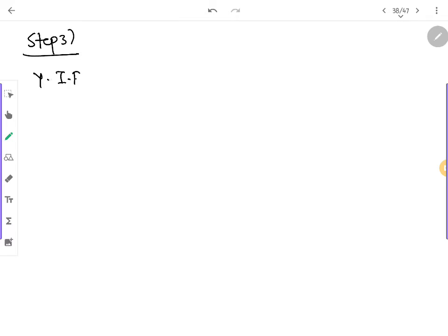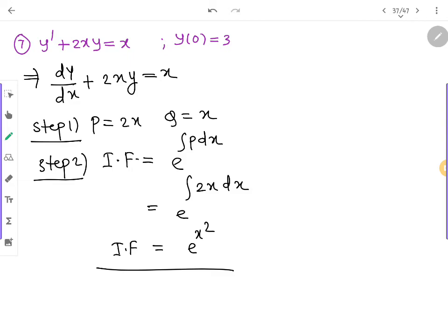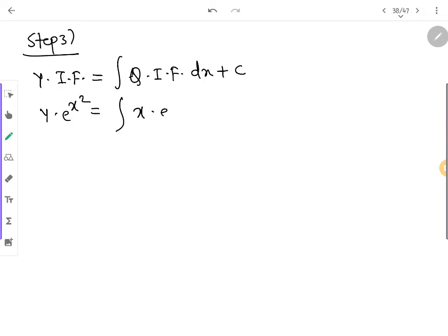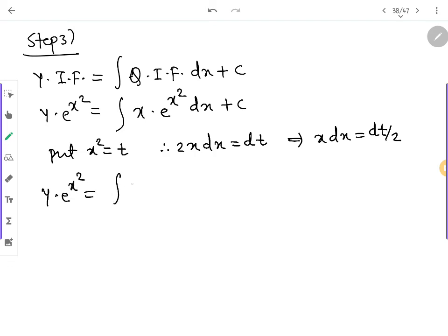So now we move to step 3. y into integrating factor is equal to Q into integrating factor dx plus c. So y e raise to x square, Q is x, so x e raise to x square dx plus c. Now here put x square is equal to t, so 2x dx is equal to dt, so x dx is equal to dt by 2.